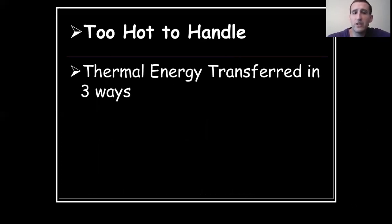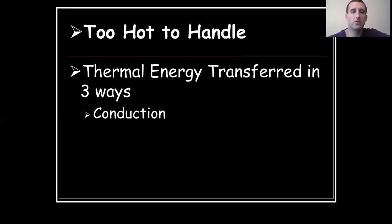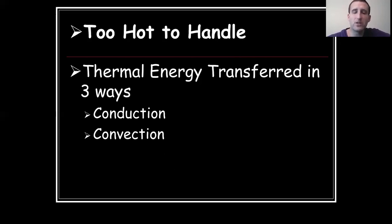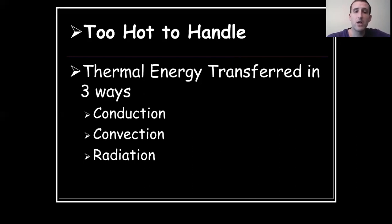There are three ways in which energy is transferred. We may have learned these in grade school science. The first is conduction — the way most of us think of energy transfer, involving actual physical contact where two things touch and energy is transferred. The second is convection — energy transfer through the movement of fluids. The third is radiation — the result of electromagnetic energy transferred through what we typically refer to as light. We will go into each of these three in more detail.